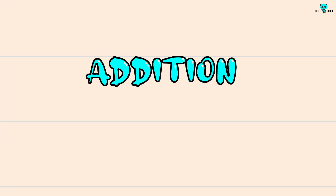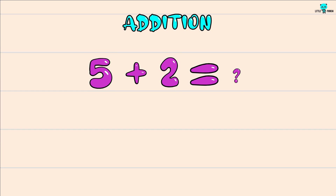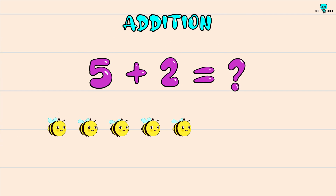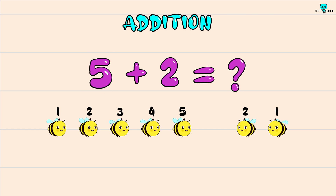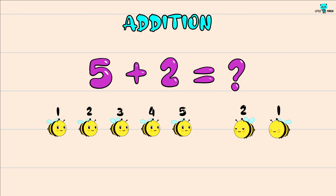Little blue panda. Solve this addition problem. We are taking honeybees for example. We have to take a greater number first and add the lesser number. So here the greater number is 5 plus 2 more.